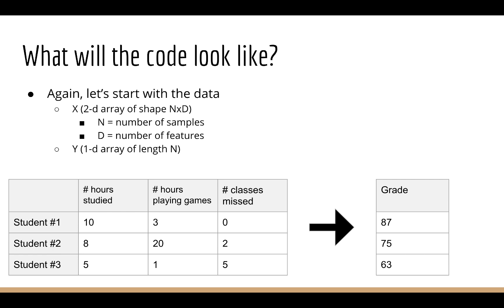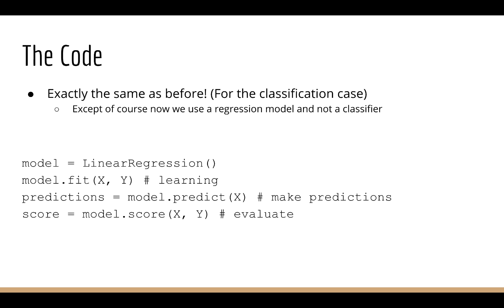And remember that these training samples help me make predictions in the future. So if you give me a new student, and you tell me that they studied 15 hours and played zero hours of video games, and missed zero classes, I would be able to predict their grade using my model. Alright, so what does the actual code look like? Lucky for us, it actually looks exactly the same as before. First, we instantiate the model, let's say we're using linear regression. Then we train the model by calling fit and passing in x and y. We can also make new predictions by calling the predict function. Finally, we can evaluate the model by calling the score function.